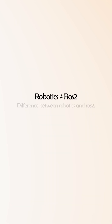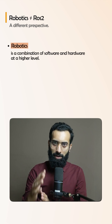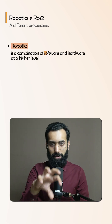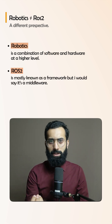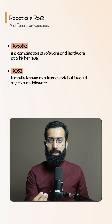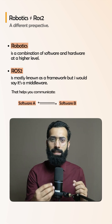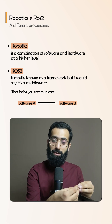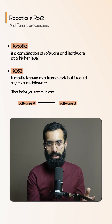Let's understand this in a deeper sense and clear this once for all. Robotics is a combination of software and hardware. At a higher level, the software of robotics involves ROS 2. ROS 2 is mostly known as a framework, but I would say it's a middleware that helps you communicate with different software. It contains packages and a lot of community work that you can connect with your software or hardware interface, saving you a lot of time in developing a robotics application.